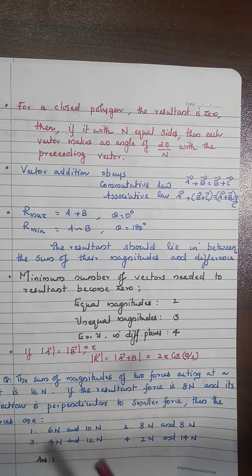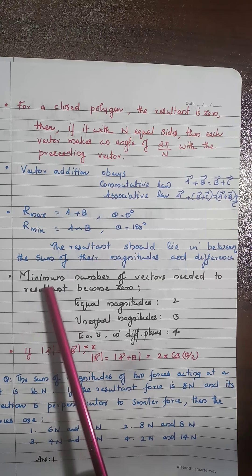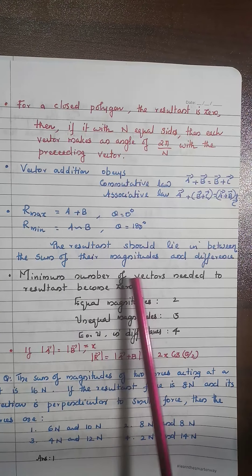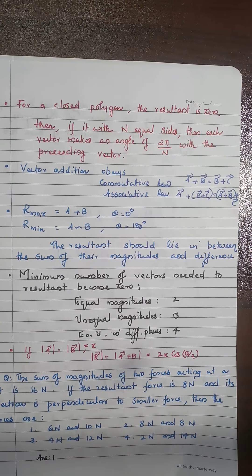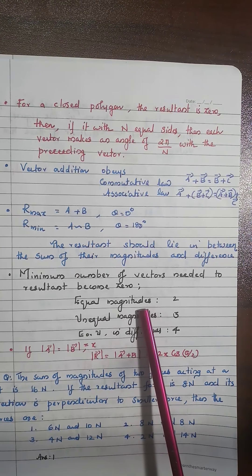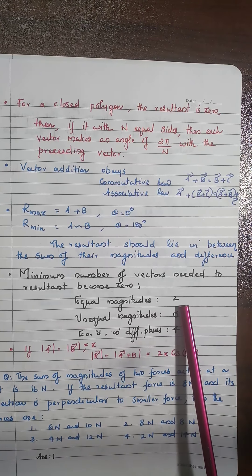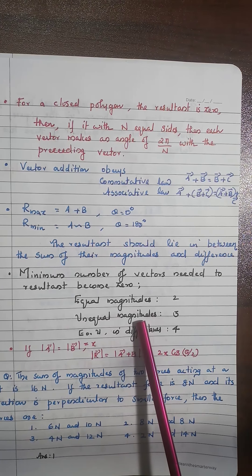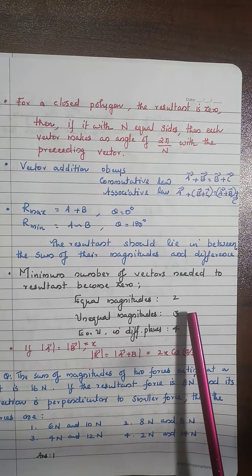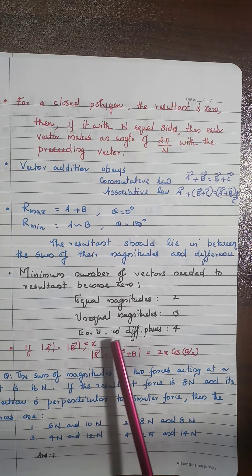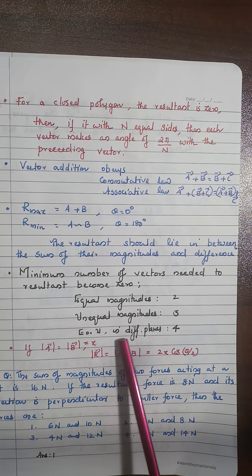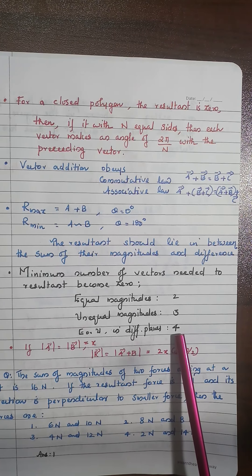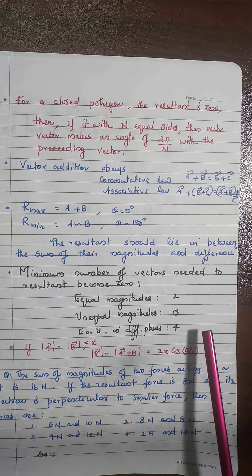The next very important point: what is the minimum number of vectors needed for the resultant to become zero? If the vectors have equal magnitudes, 2 vectors are needed. If they have unequal magnitudes, 3 vectors are needed. But if they are acting at different points, a minimum of 4 vectors are needed for the resultant to be zero.